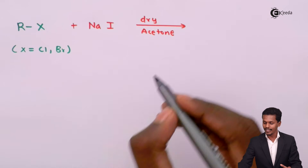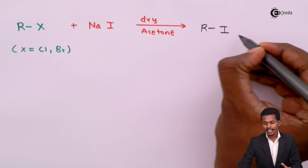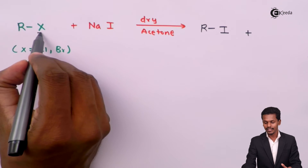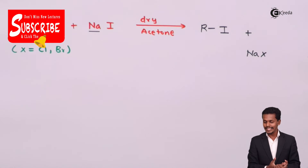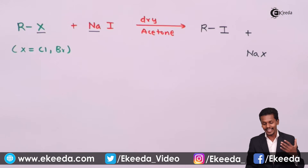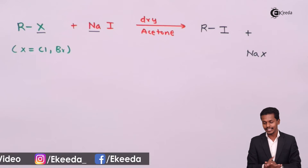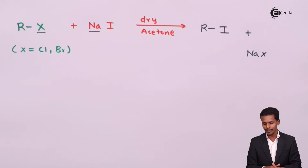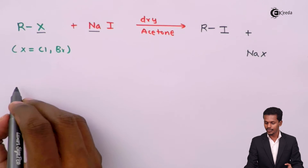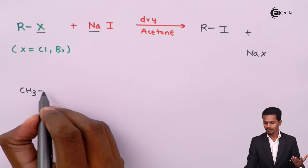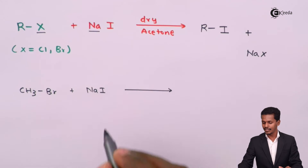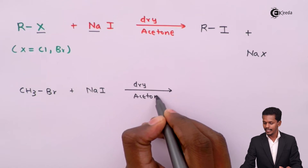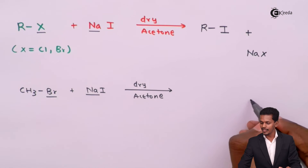The product obtained is alkyl iodide (RI), and Na moves away along with X to form NaX as the byproduct. This is how we can obtain an alkyl iodide by exchanging the halogen from an alkyl chloride or alkyl bromide. For example, CH3Br reacted with NaI in the presence of dry acetone — this is the Finkelstein reaction.